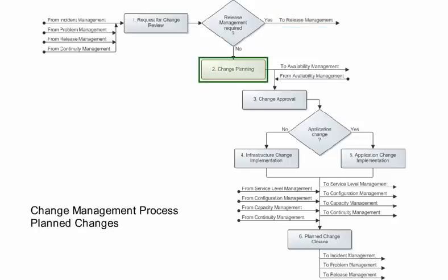The change planning process starts with a risk and impact analysis, in which the change coordinator consults with specialists to gather information to create a change implementation plan. If corporate policy requires approvals, the change approval process comes next. Otherwise, the coordinator moves directly to the implementation process.